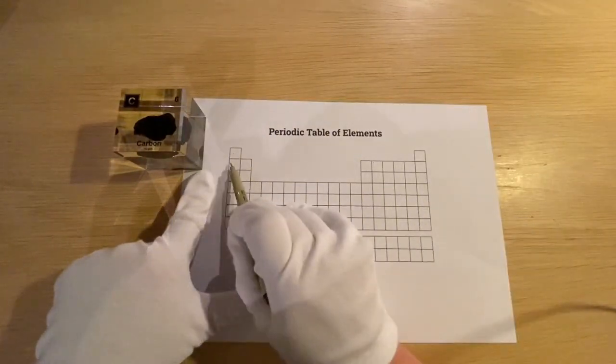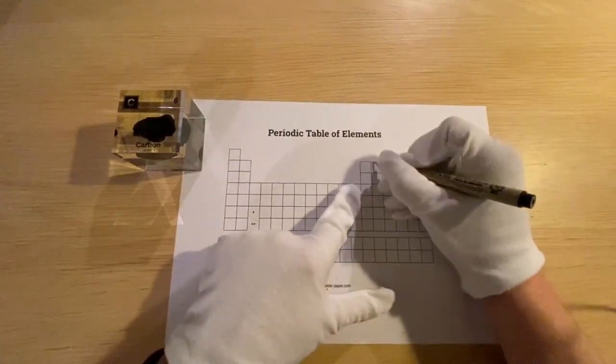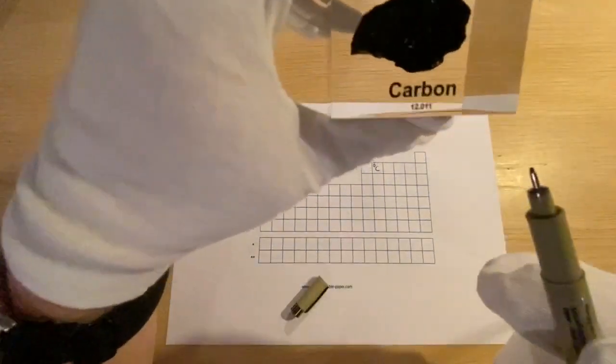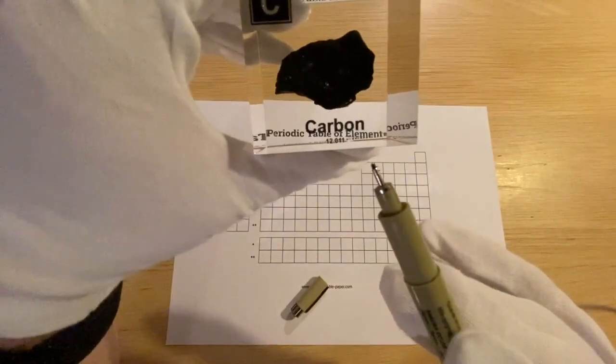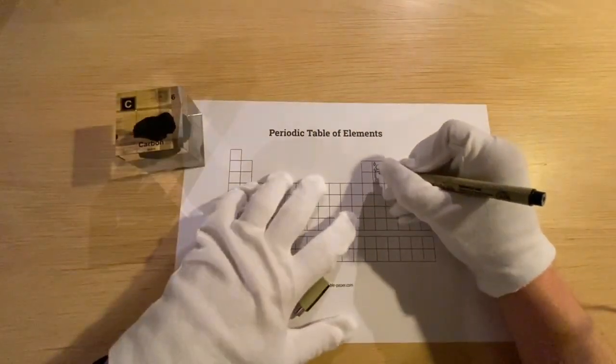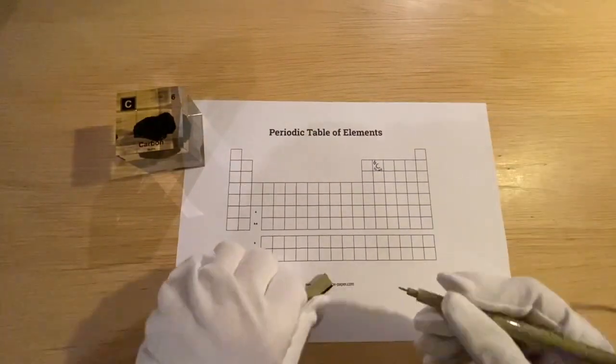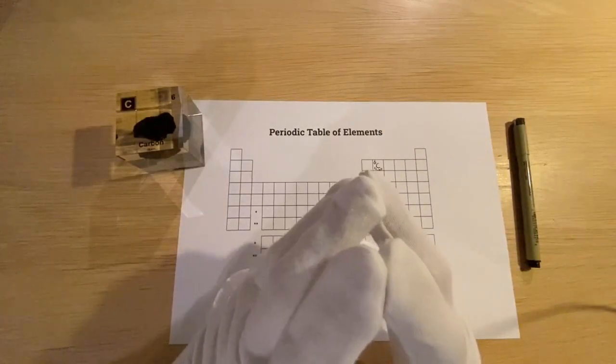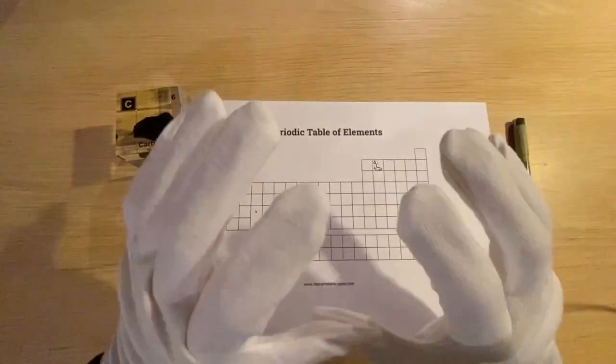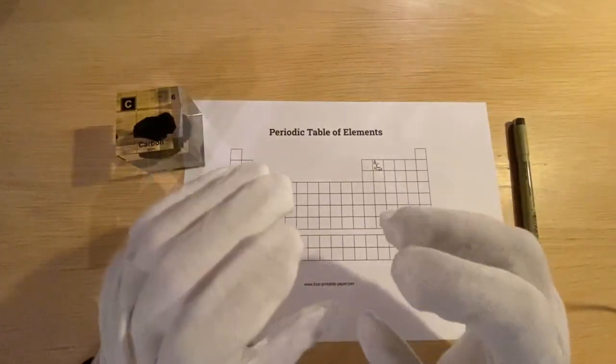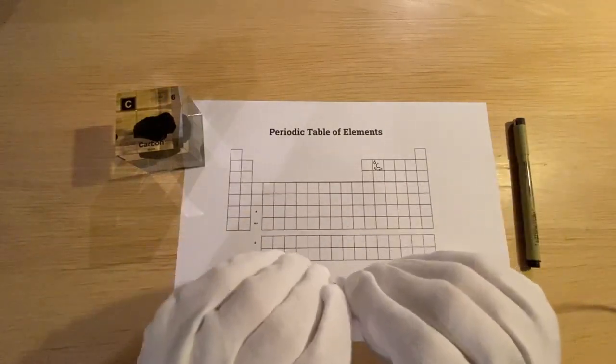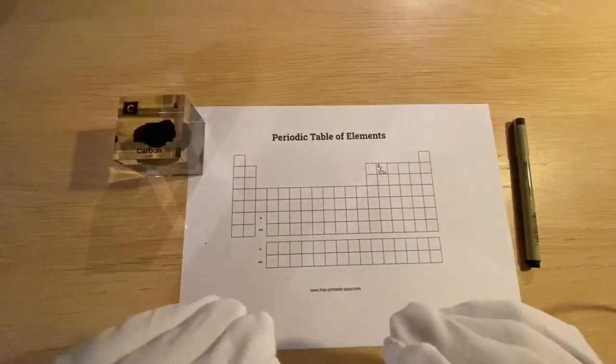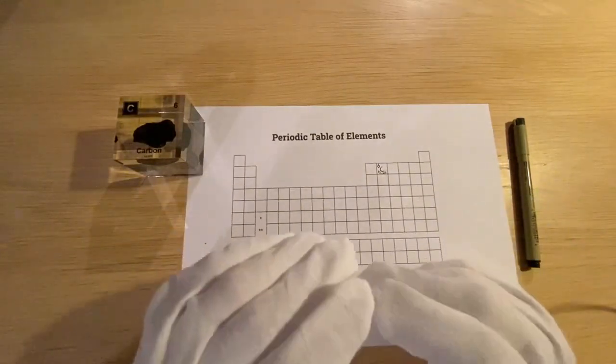So let's count one, two, three, four, five, six. We have element number six here, which we write with a big C for carbon. And now we also see something else here. If you look closely, you can see 12.011. Now 12.011 is the atomic mass. And the atomic mass is basically the average mass of a specific atom. Now atoms, I told you there are neutrons in there, but the amount of neutrons can vary in different, what we call, isotopes.